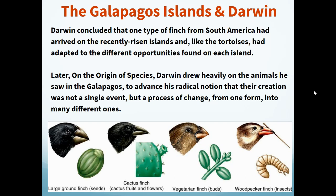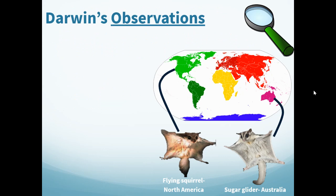Darwin concluded that one type of finch from South America had arrived on the recently risen islands, just like the tortoises, and adapted to the different opportunities found on each island. In his book The Origin of Species, Darwin drew heavily on these animals to advance the notion that their creation was not a single event by God, but a process of natural change from one form to another. All of the finches share beaks, but the shape relates to the type of food they were best adapted to consume on their island.